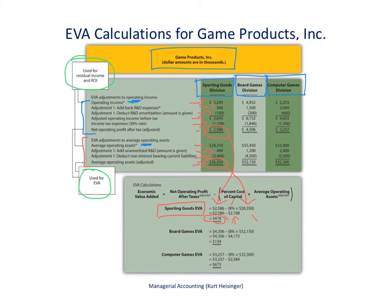This is very useful, similar to residual income, for comparing divisions across periods — specifically staying within one division and comparing those numbers across periods. It's more useful for that than comparing divisions with each other, because it's just a dollar amount and not a percentage, making it difficult to compare different divisions directly. So it's really more useful for looking at a division over time.